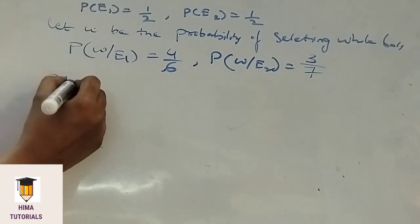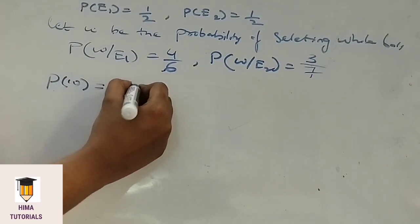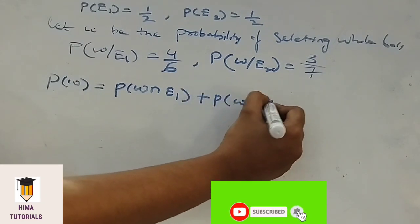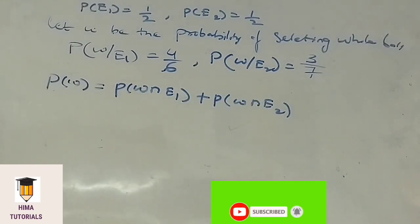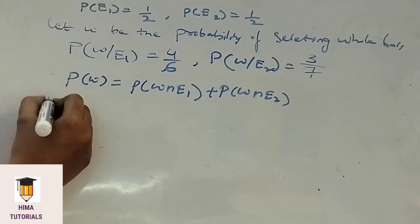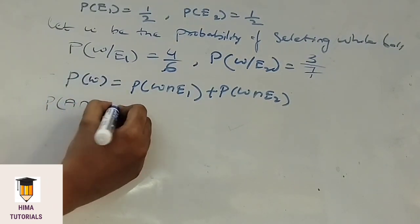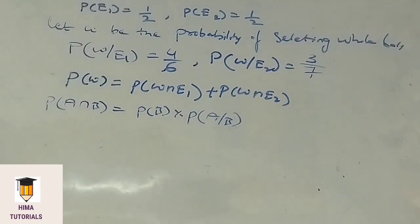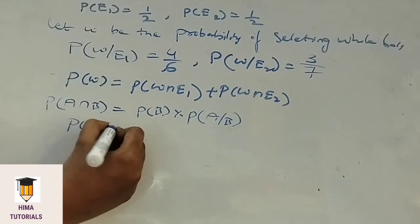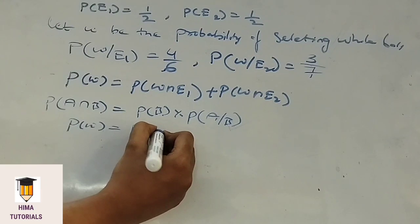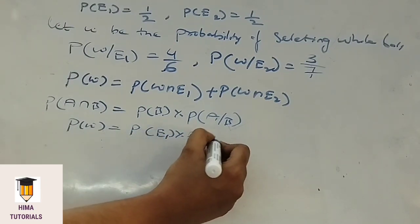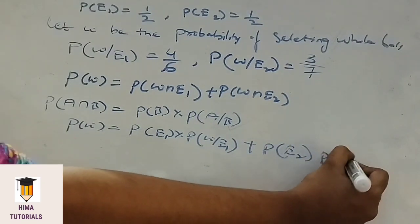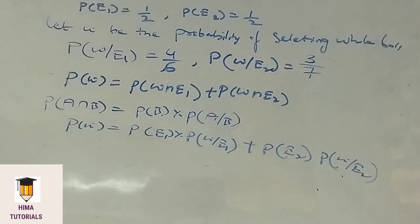Probability that the ball drawn is white is given by P of W equals P of W intersection E1 plus P of W intersection E2. By the multiplication theorem of probability, P of A intersection B equals P of B into P of A given B. So P of W equals P of E1 into P of W given E1 plus P of E2 into P of W given E2.